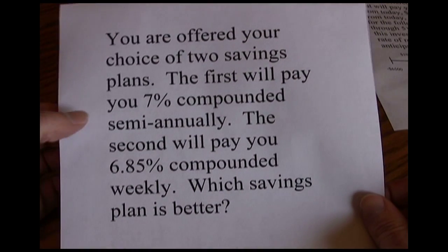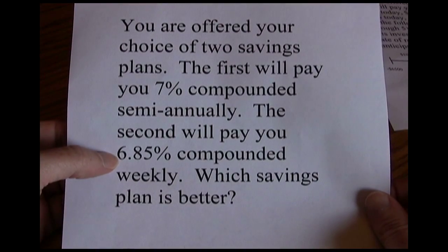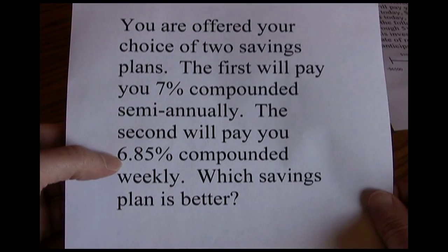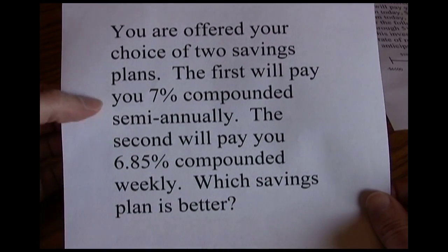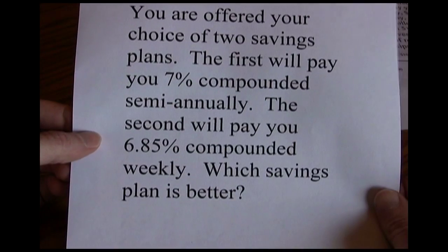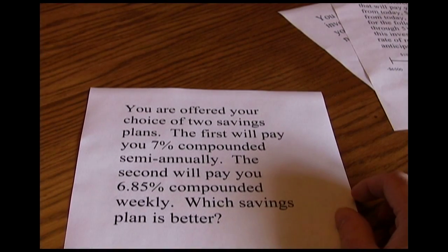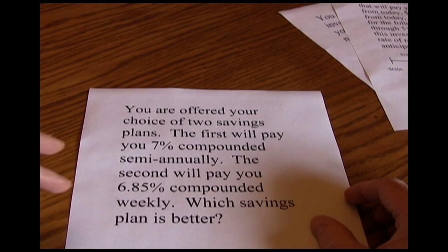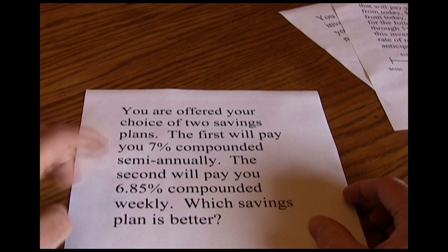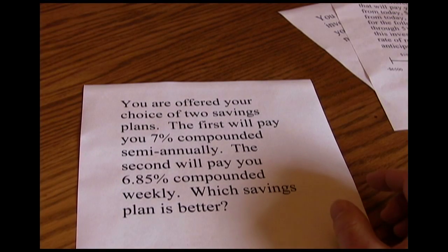Ordinarily we'd want 7% above 6.85% — the higher the rate the better. However, the 6.85% is compounded weekly, while 7% is only compounded semi-annually. The more frequent the compounding, the better off we are. So what we have to do is figure out which dominates: is it better to get the 7% compounded less frequently, or the 6.85% compounded more frequently?